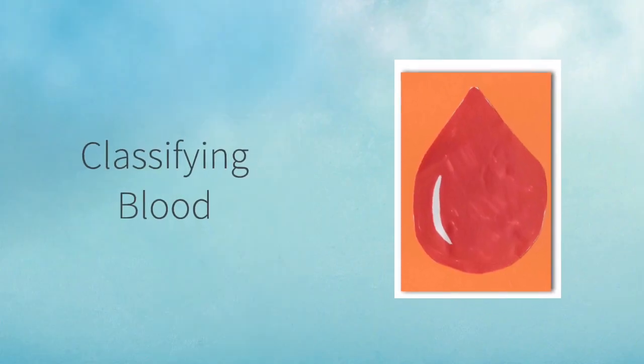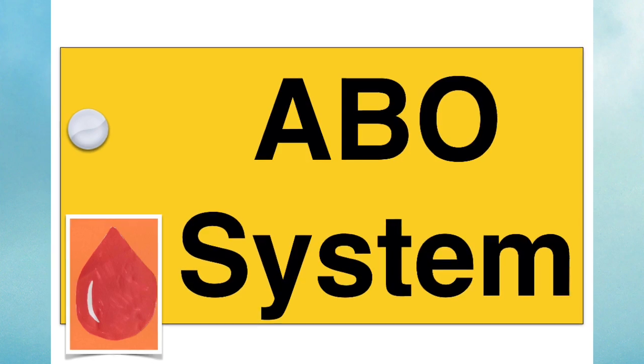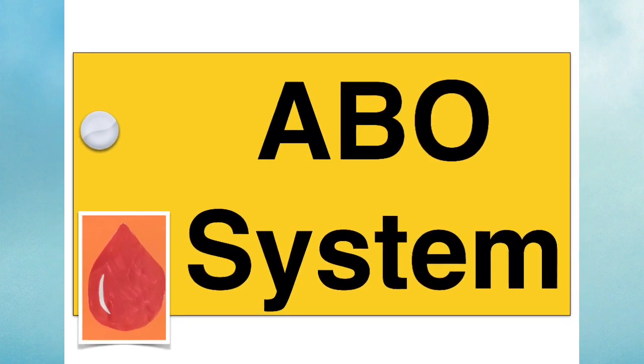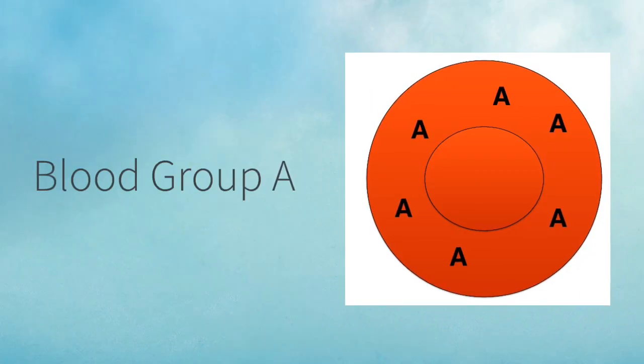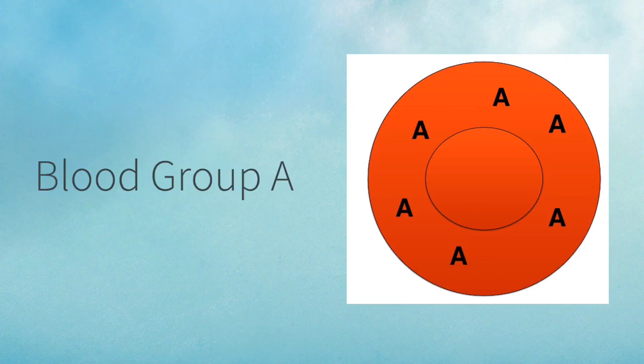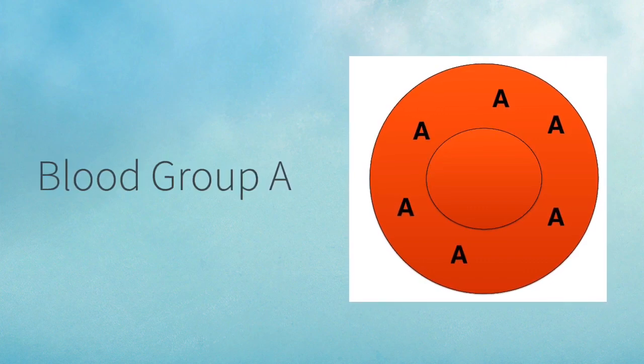Now it's on to classifying blood. The first way of classifying blood is the ABO system, which gives you your blood group. If you're blood group A, it means that you have these particular A antigens on the surface of your red blood cells.